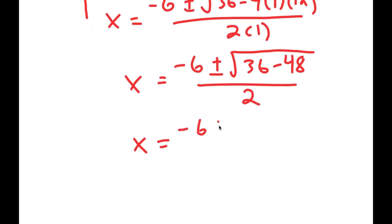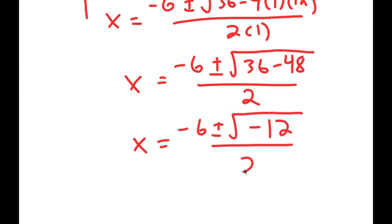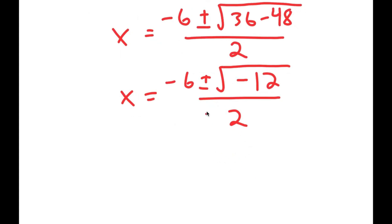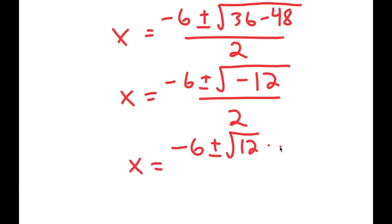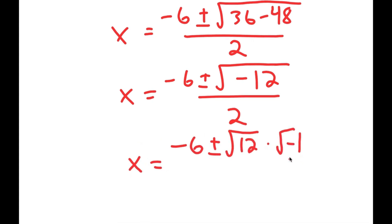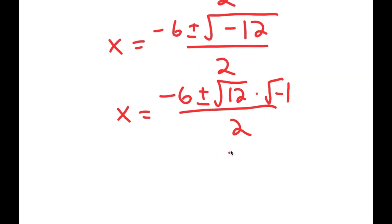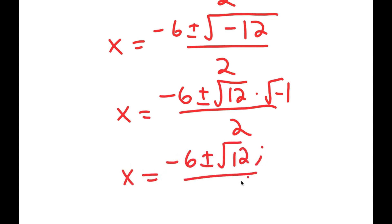This is equal to negative 6 plus or minus the square root of 36 minus 48, which is negative 12, over 2. From here, you get negative 6 plus or minus the square root of 12 times the square root of negative 1. The square root of negative 1 is the imaginary number i. So I get x is equal to negative 6 plus or minus the square root of 12 i over 2.